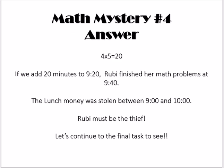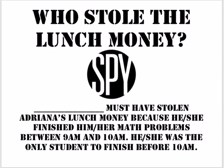Math mystery answer clue number four: four times five equals 20. If we add 20 minutes to 9:20, Ruby finished her math problems at 9:40 a.m. The lunch money was stolen between 9 and 10 a.m. So Ruby must be the thief. Let's look at our final page and see who stole the lunch money.